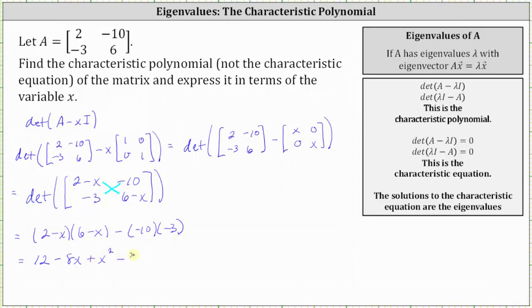And then we have minus 30. The last step is to combine like terms. Notice how we have two constants. Let's also write the terms in descending order.